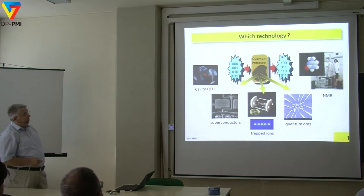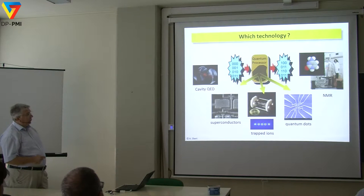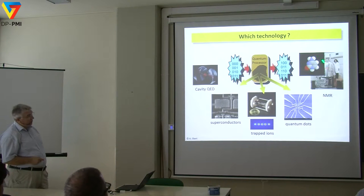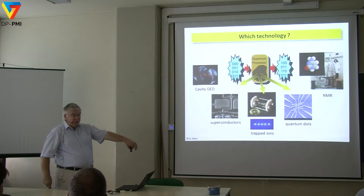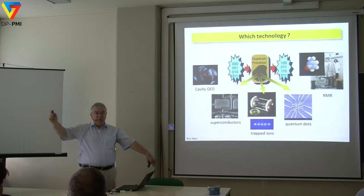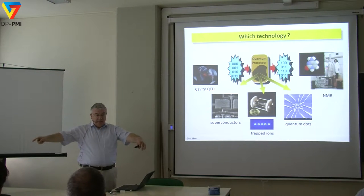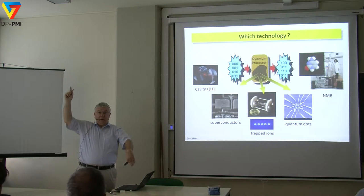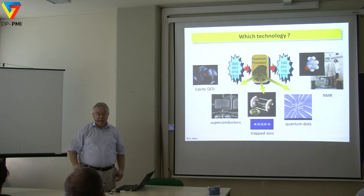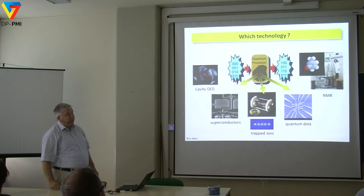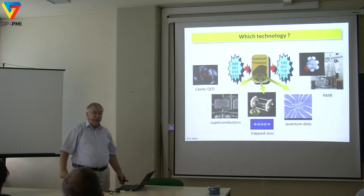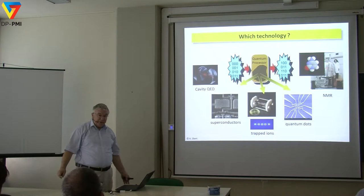There are many quantum systems available. The first things investigated were nuclear magnetic resonance in complicated molecules, where two-level systems are nuclear spins of individual molecules — you can address those in frequency space because they differ in the magnetic field. The difficulty is that this holds only for an individual molecule, but signals are obtained from a mixture, and there is nothing like entanglement in such a system.